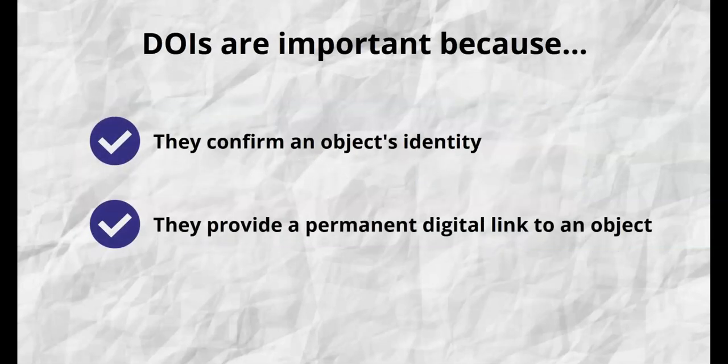Here are two reasons why DOIs are so useful. First, they confirm an object's identity. Many authors share the same name and different articles might even share very similar titles. Since DOIs are unique, they will help you find the exact article that a DOI has been assigned to, so there is no mixing up authors or titles.